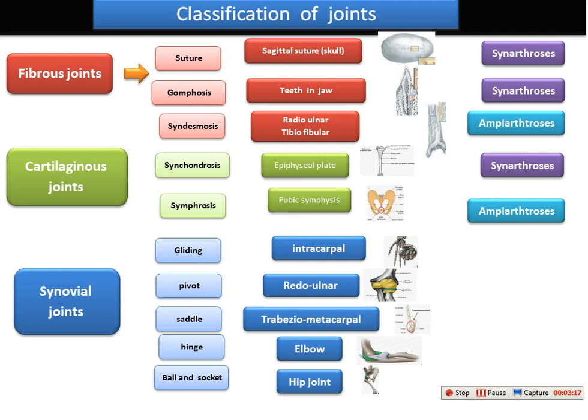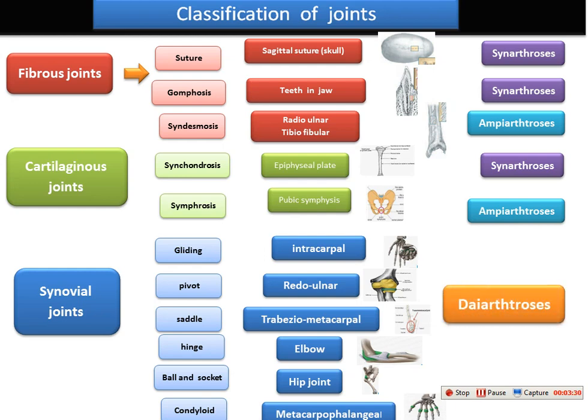As well we have the condyloid joint, and this is found in the metacarpophalangeal bones. All these synovial joints are classified according to their movement into diarthrosis. This is all for the classification of joints. Thank you for listening.